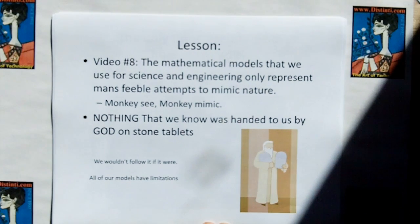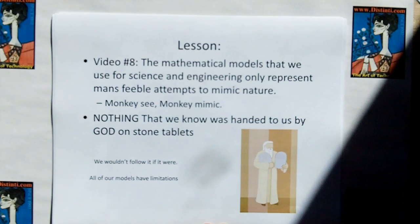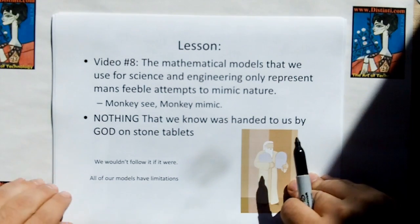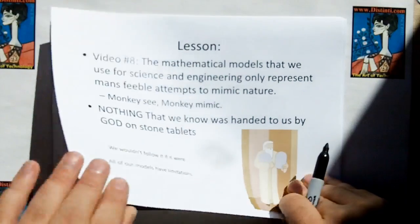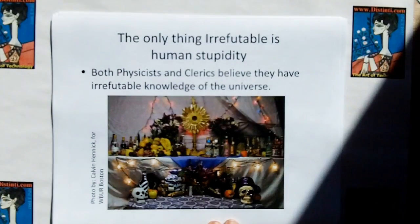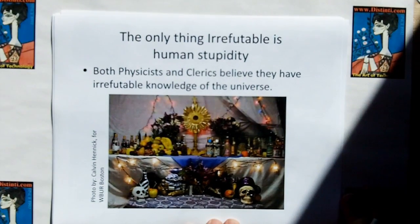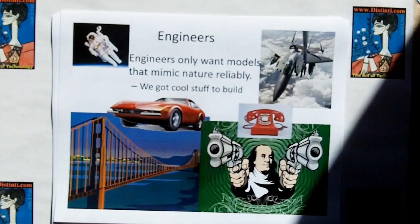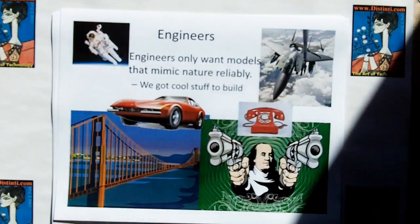What we learned from this — echoed in video 8 — is that the mathematical models we use for science and engineering only represent man's feeble attempts to mimic nature. Nothing that we know was handed to us on stone tablets. We only want models that mimic nature reliably. Monkey see, monkey mimic.